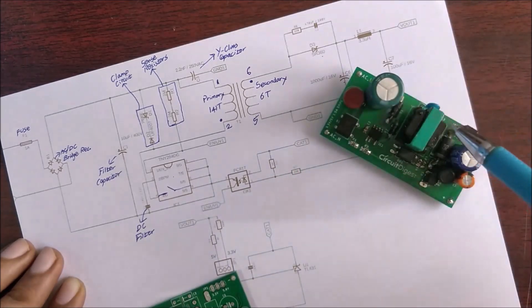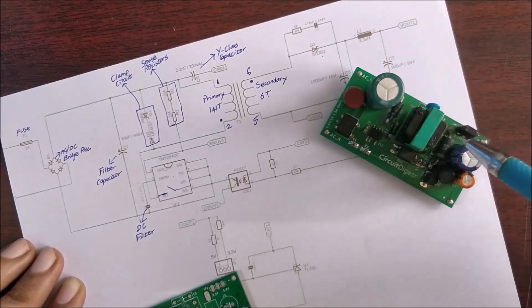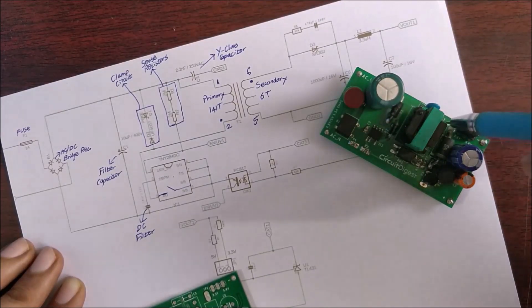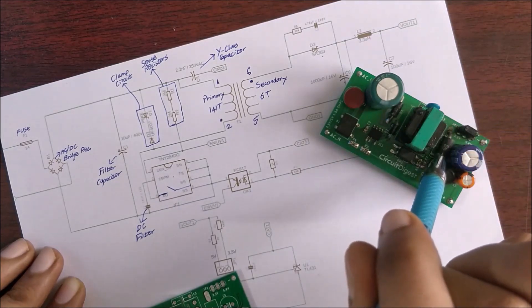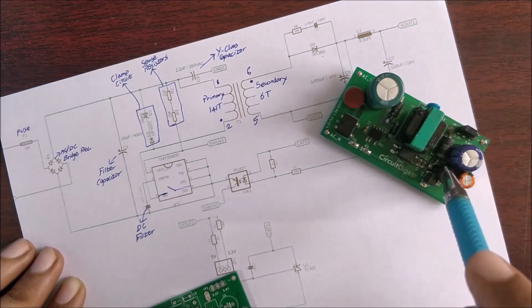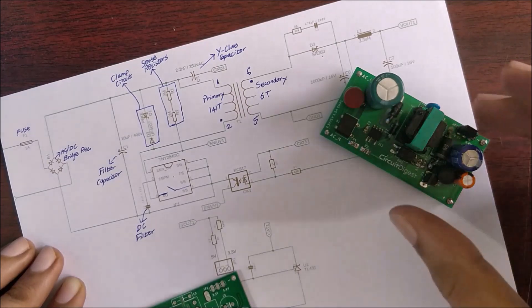If you see the board you can also see there is the output from the secondary side of the transformer over here. The output from the secondary side passes through this Schottky diode over here and the filter capacitor is this one which is 1000 microfarad and 16 volts.